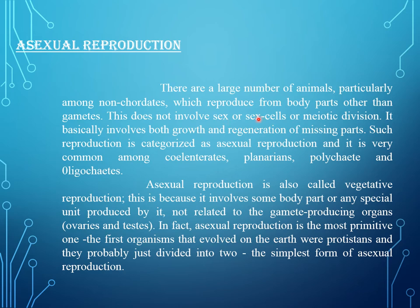There are a large number of animals, particularly among non-coordates, which reproduce from body parts other than gametes. This does not involve sex cells or meiotic division. It basically involves both growth and generation of missing parts. Such reproduction is categorized as asexual reproduction and is very common among cnidarians, planaria, polychaeta, and oligochaeta. Asexual reproduction is also called vegetative reproduction, because it involves body parts not related to the gamete-producing organs, ovaries and testes.